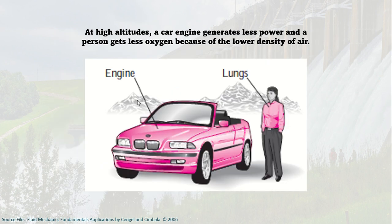For example, if you go to a mountain, at high altitudes your car engine will generate less power, and you as a person would experience lesser oxygen because of the lower density of air at that height. As you go up, the density of air decreases and you get lesser oxygen. As a result, your car generates less power and your lungs have difficulty getting oxygen, which is why we experience difficulty breathing during mountaineering.